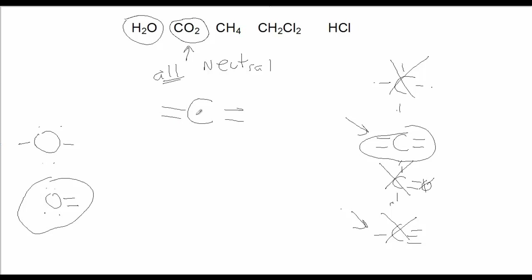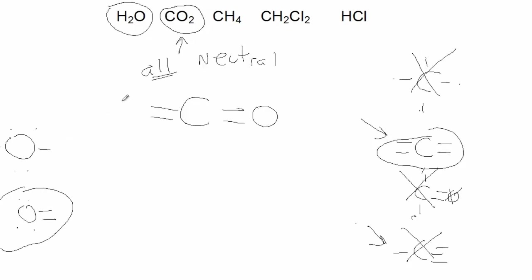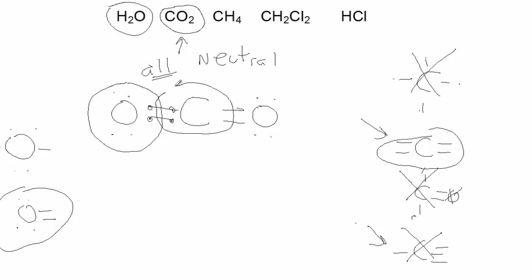I go ahead and write my Lewis structure with two oxygens, double bonds, and the corresponding lone pairs. Oxygen brings six electrons to the party and picks up its seventh and eighth electron from carbon when it shares its two electrons. Carbon brings four electrons and picks up its fifth, sixth, seventh, and eighth when it shares with the two oxygens.